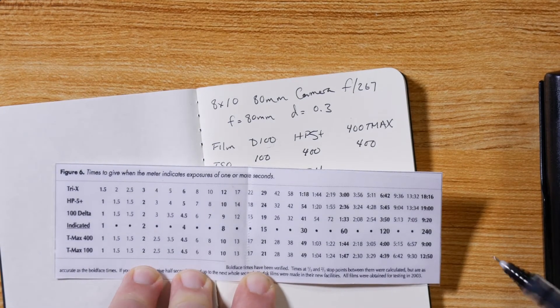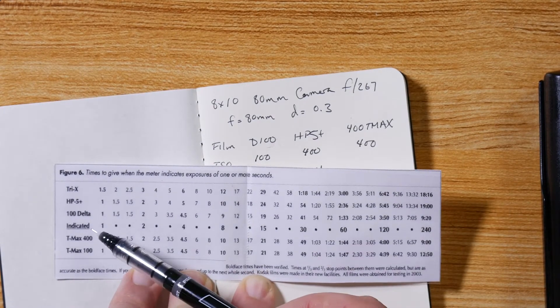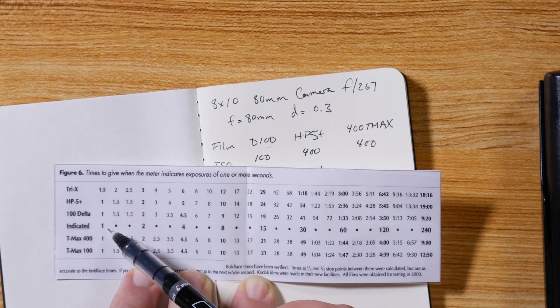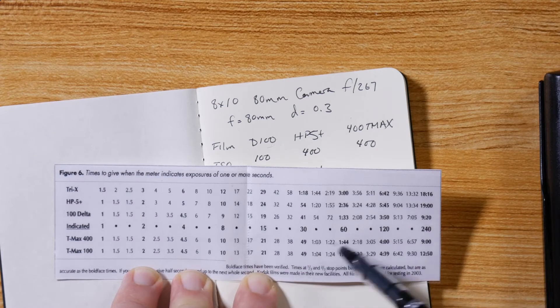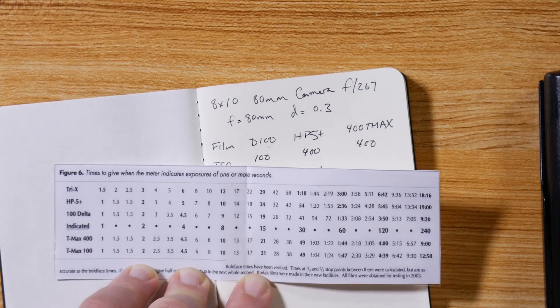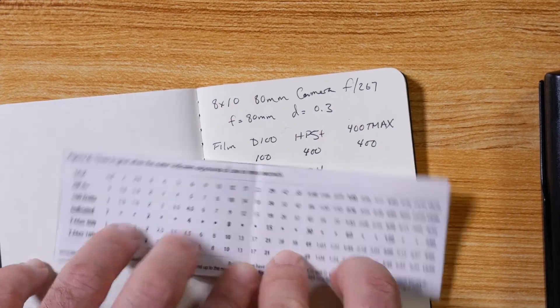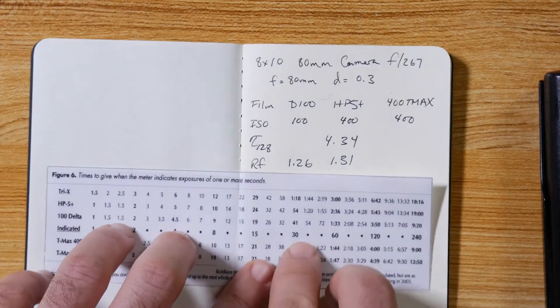Essentially what this shows, according to this person - again we have to independently verify this - here's the indicated time in the middle and it's in third of a stops, but it starts at one, two, four and they have third stop markings.